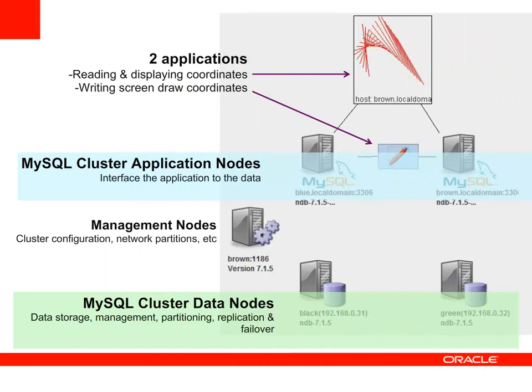The MySQL Cluster application nodes, in the middle, provide the interface from the applications to the data nodes. In this example, we'll be using MySQL Server, which provides an SQL interface for the application. We could alternatively use the direct APIs — including Java, C++, LDAP, and HTTP interfaces — to directly connect the application to the data nodes, bypassing SQL altogether. The final nodes are for management. For best practice, you would deploy two nodes. The management nodes are responsible for configuration of the cluster and for handling network partitions, i.e., avoiding split-brain.